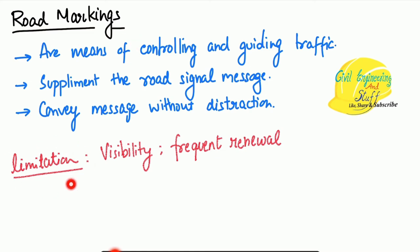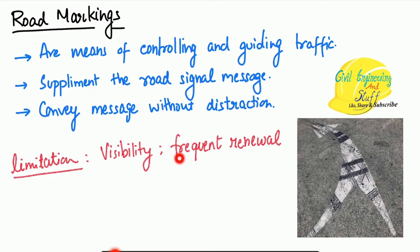However, there are certain limitations with road markings. The main limitation is visibility, especially at night. Road markings also require frequent renewal because of the constant movement of traffic over the pavement markings — the markings get diminished over time, so they require proper maintenance at frequent intervals.